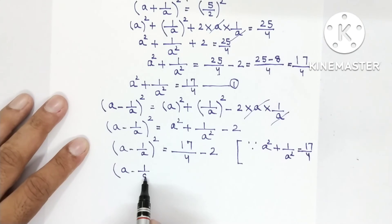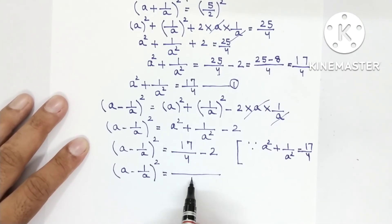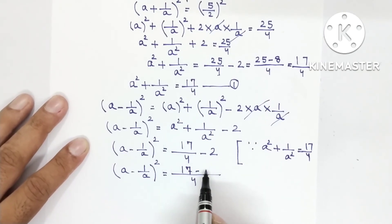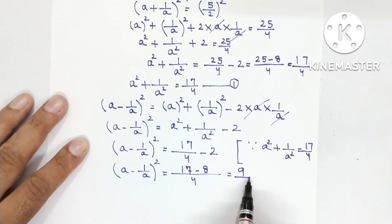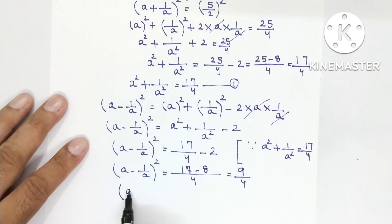(a - 1/a)². LCM is 4. 17 remains 17 minus 4 × 2 = 8. So 17 - 8 = 9. 9/4. Now (a - 1/a)² = 9/4, so taking square root, a - 1/a = 3/2.